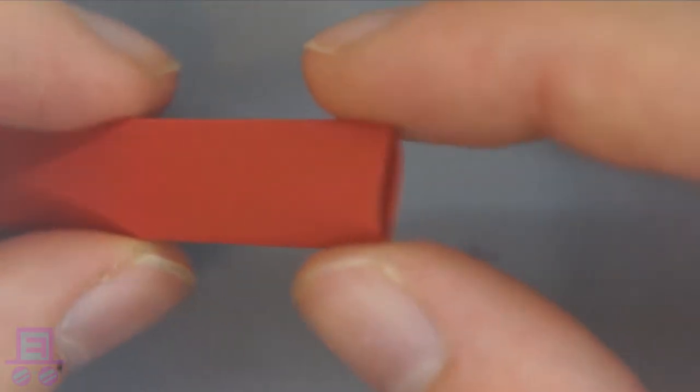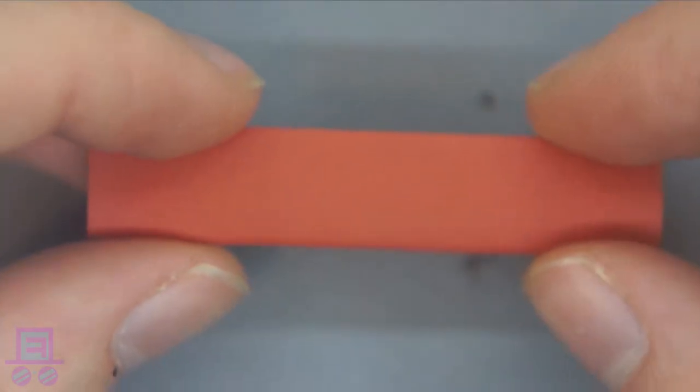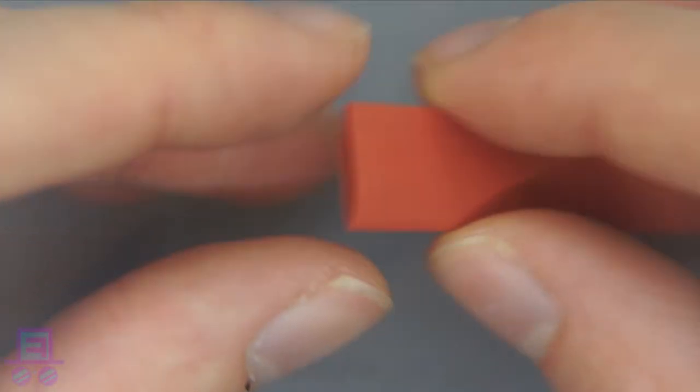Shrink wrap is insanely useful, and I would recommend getting a selection of sizes. We're going to be using this to strengthen and insulate our solder joints.